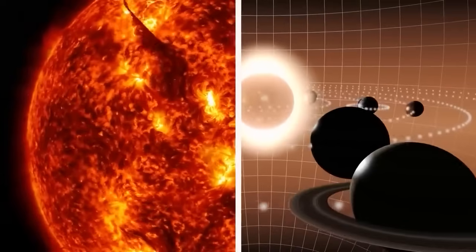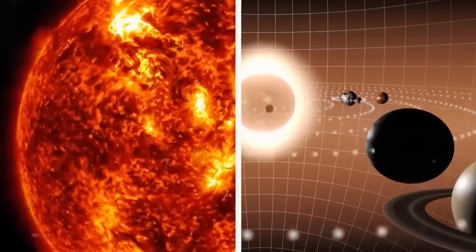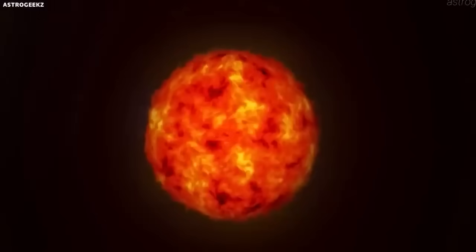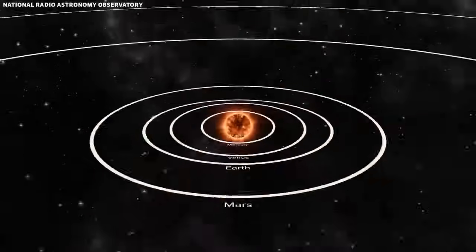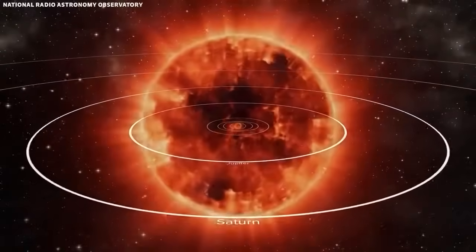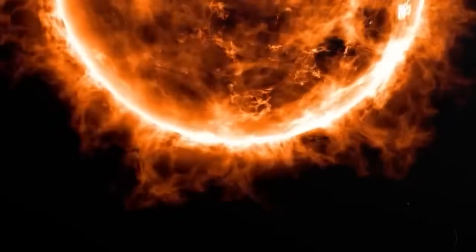Can you imagine a single star dwarfing our entire solar system? To provide some perspective on the sheer enormity of Betelgeuse, if it took the place of our sun, its edges would extend all the way to Jupiter. How can a single star achieve such colossal proportions?